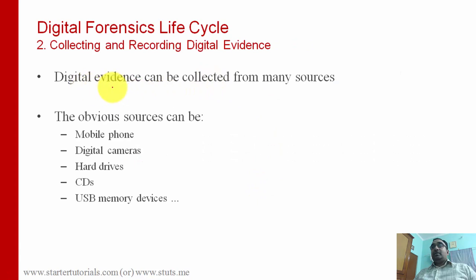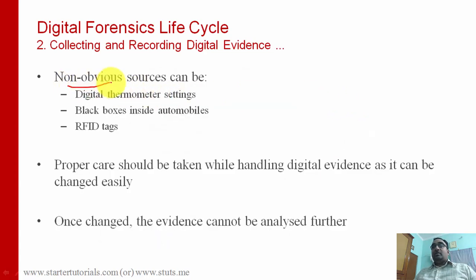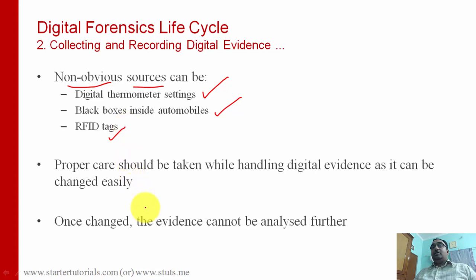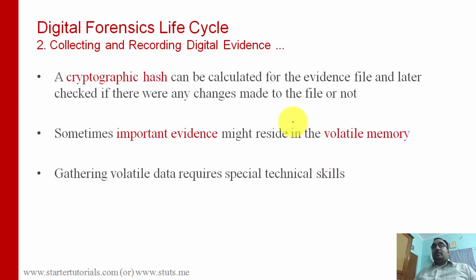In the second phase, evidence can be collected from different sources. The obvious sources are mobile phones, digital cameras, hard drives, CDs, USB devices, and others. But there are also non-obvious sources of information like digital thermometers, black boxes found inside automobiles, air appliances, and RFID tags. Proper care should be taken while handling digital evidence as it is very sensitive to changes — once digital evidence is changed, it cannot be analyzed further.